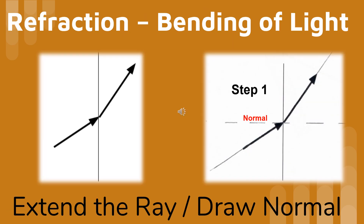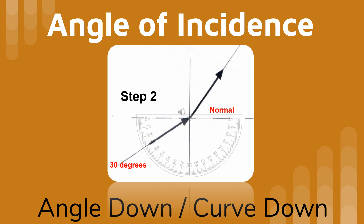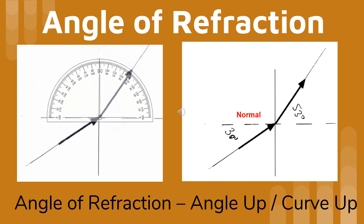Here is another refraction problem. Once again, we extend the length of the ray and draw a dotted line perpendicular to the surface where medium 1 meets medium 2. The angle the first ray makes with the normal is called the angle of incidence. To measure the angle of incidence, we point the curve of the protractor toward the ray, the zero line on the normal, and the center of the protractor where the ray hits the border separating medium 1 from medium 2. Now we measure the angle of refraction by pointing the curve of the protractor toward the ray, the zero line on the normal, and the center of the protractor where the ray hits the boundary between medium 1 and medium 2.